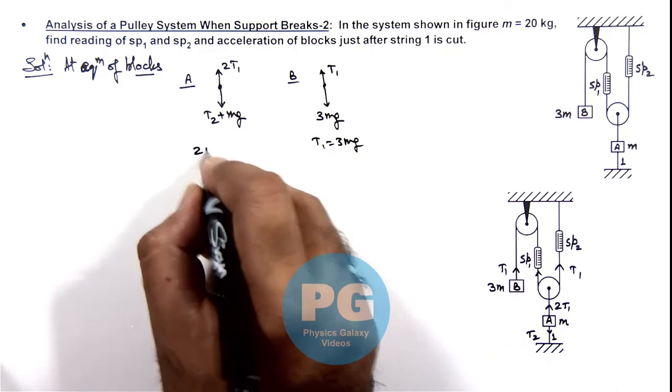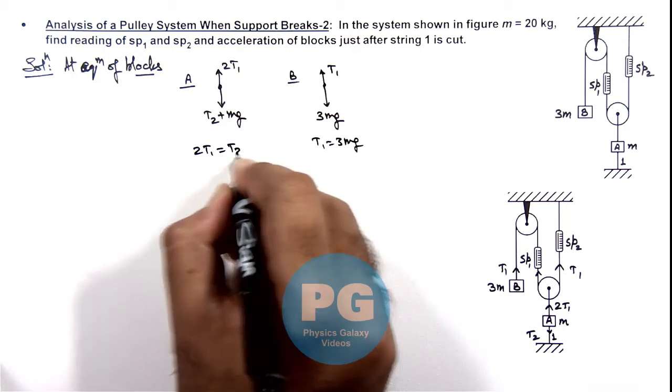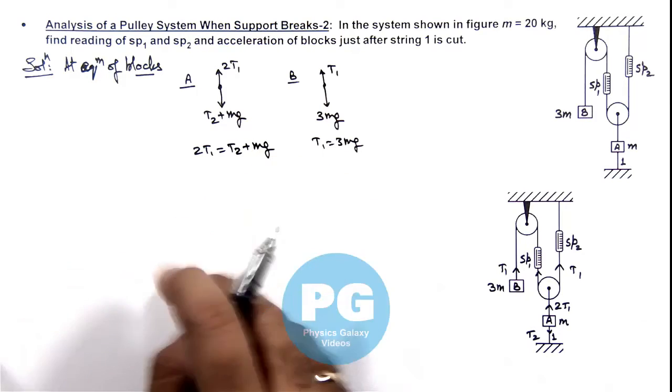And the value of 2T1 is equal to T2 plus mg. So this is the initial state.